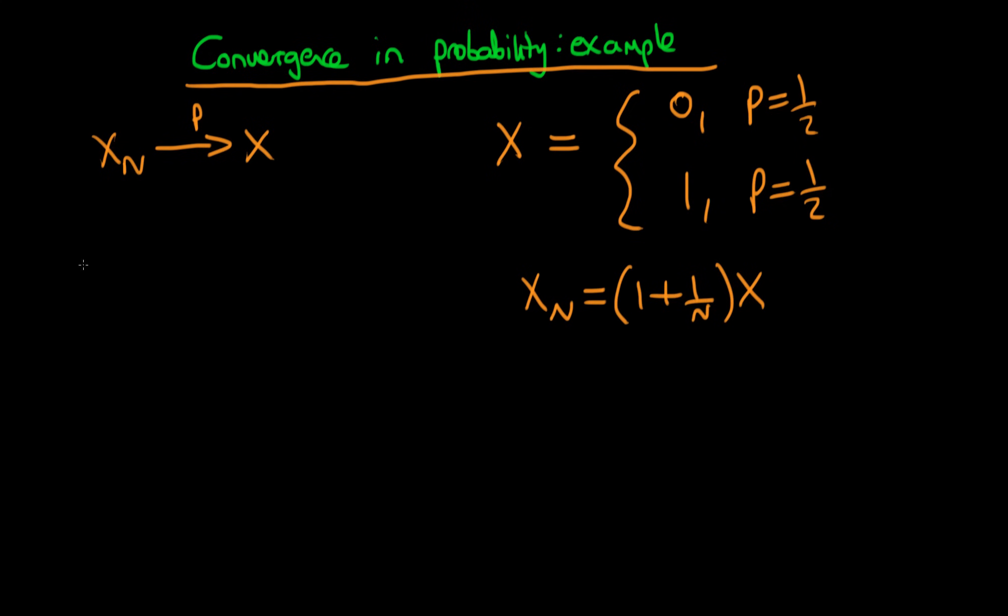So first of all let's just write out what it actually means for a random variable to tend in probability to another random variable. So we have that Xn tends in probability to X if it is the case that the probability that Xn differs from X by a positive amount ε is equal to zero for all positive ε.